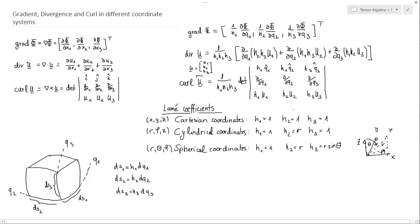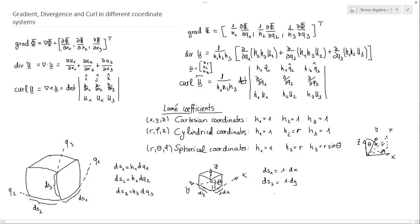For Cartesian coordinates — x, y, z — imagine a small cube. The side lengths are simply dx, dy, dz. So ds1 = 1·dx, ds2 = 1·dy, ds3 = 1·dz, giving h1 = 1, h2 = 1, h3 = 1. This is quite straightforward.